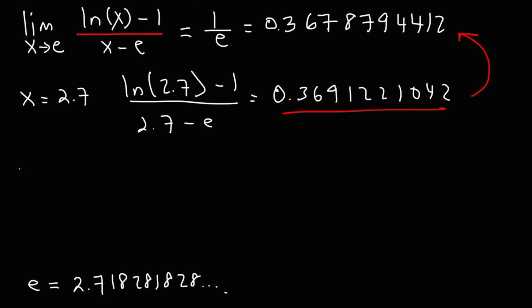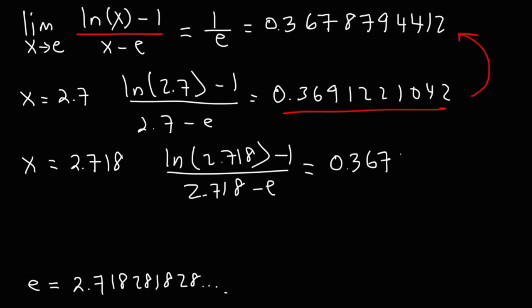But let's pick a number that's even closer. Let's try 2.718. So if we plug in ln(2.718) minus 1 over 2.718 minus e. So this becomes 0.3678985132. So this is even closer to the actual answer.